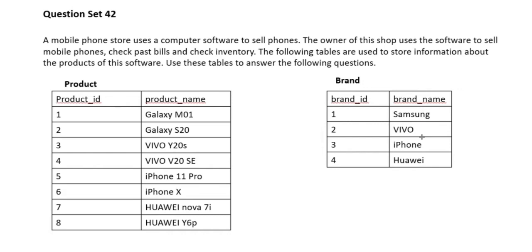A mobile phone store uses computer software to sell phones. The owner uses the software to sell mobile phones, check past bills, and check inventory. The following tables are used to store information about the products of this software. Use these tables to answer the following questions.